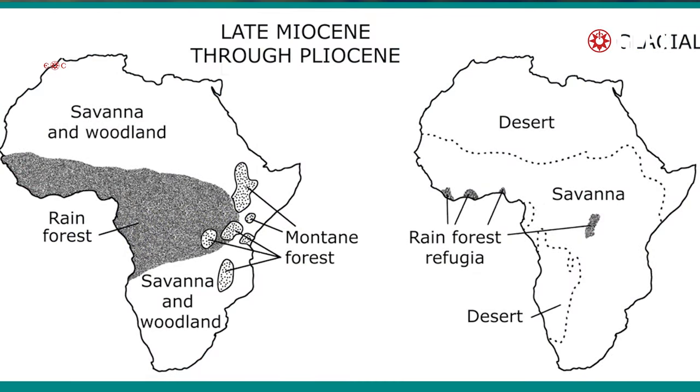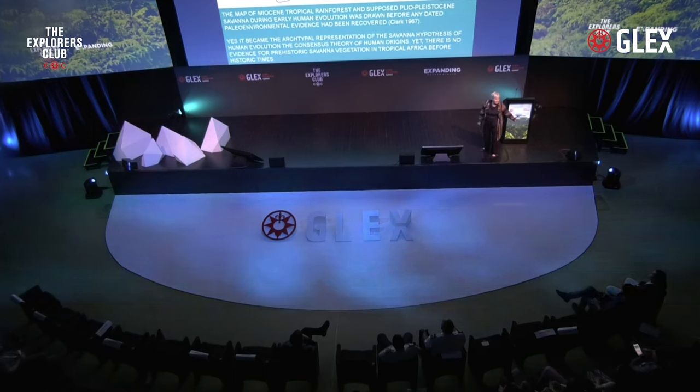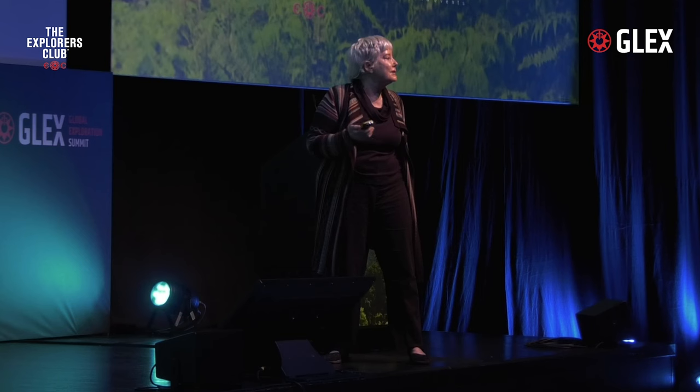These maps show you the Miocene large forest and the huge savanna that is supposed to have replaced it during the Pleistocene glacials, but this map was drawn before there was any dated paleo-environmental information from Africa. I'm trying to make the point that we want to be careful of theories that come before the data, especially charismatic theories that wonderful scientists with very prestigious institutions bring, because they may be wrong. We should always pursue the background of facts about these theories.